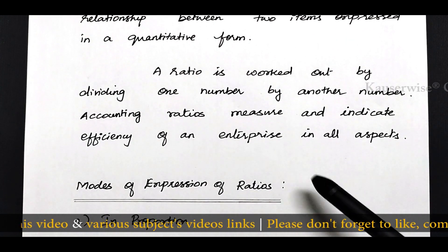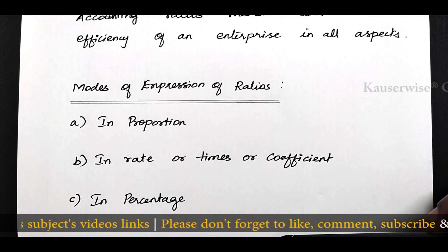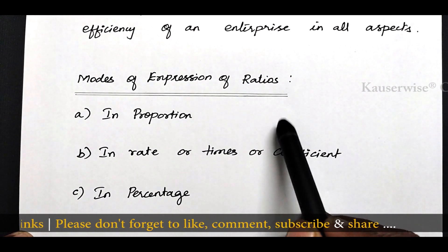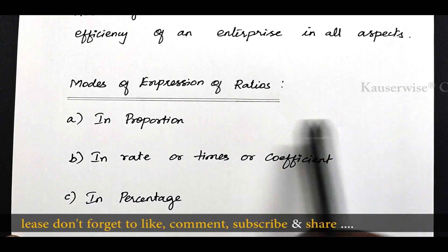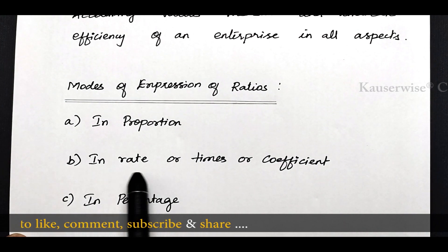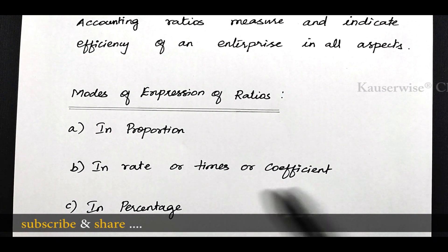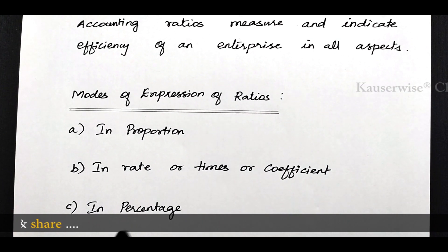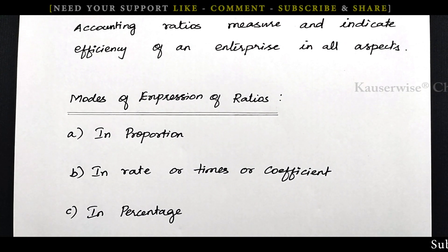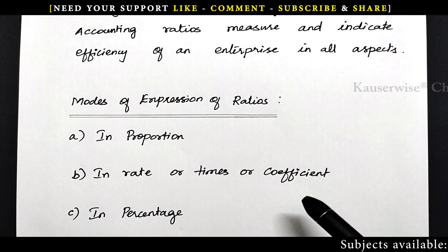Here we have different modes of expression of ratios. Ratios can be expressed in any one of the following forms. The first one is in proportion — for example, 1 is to 2 or 3 is to 2. The second one is in rate or times or coefficient — the answer will be like 2 times or 3 times. The third one is in percentage, like 10%, 20%, or 50%. These are the three different modes of expression of ratios.